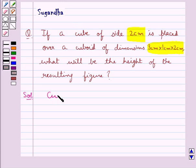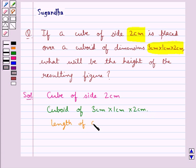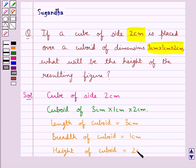We are given a cube of side 2 cm and a cuboid of dimensions 3 cm × 1 cm × 2 cm. That is, the length of the cuboid is 3 cm, the breadth of the cuboid is 1 cm, and the height of the cuboid is 2 cm.